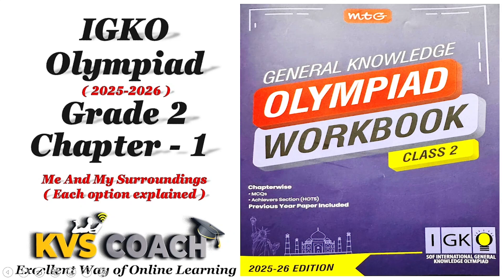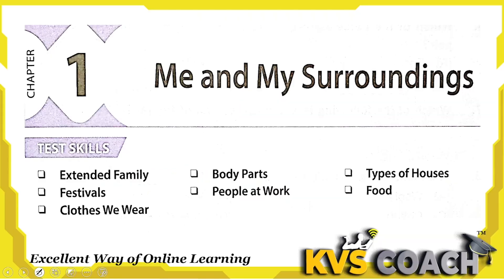Hello dear kids, now we are going to start Class 2 IGKO Olympiad Workbook and the chapter name is 'Me and My Surroundings.' In this chapter we are going to discuss extended family, body parts, types of houses, festivals, people at work, food, and clothes we wear.